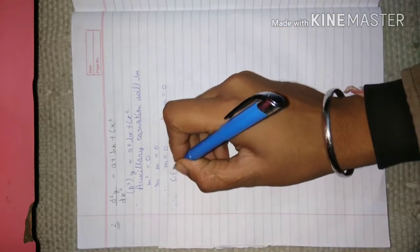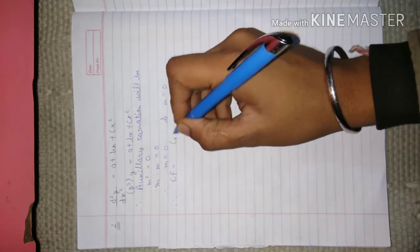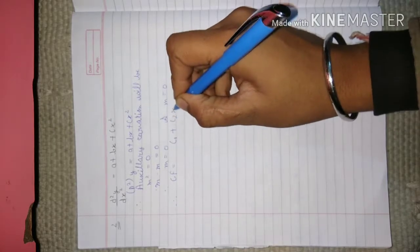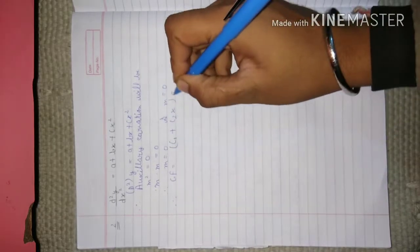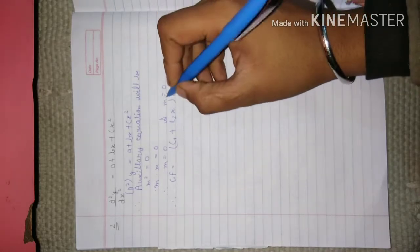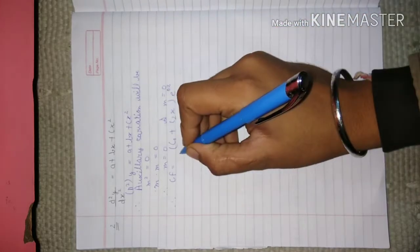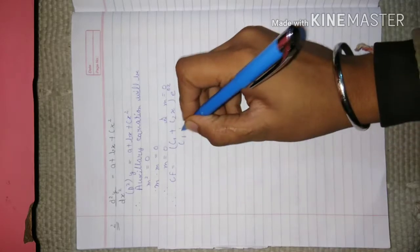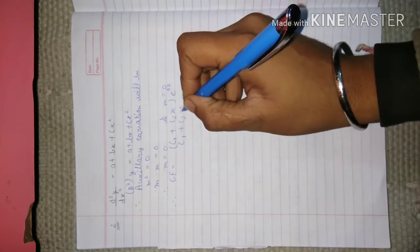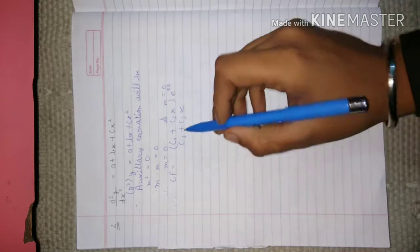Therefore, CF = c1 + c2x, like e^(mx). What is m? 0x. Therefore, CF will be c1 + c2x. That is the main step.